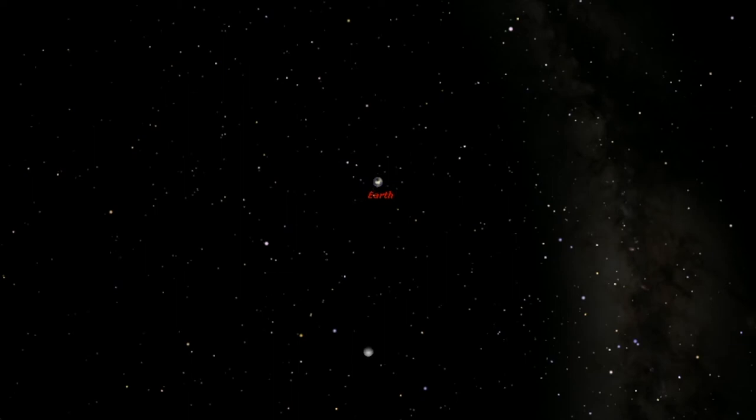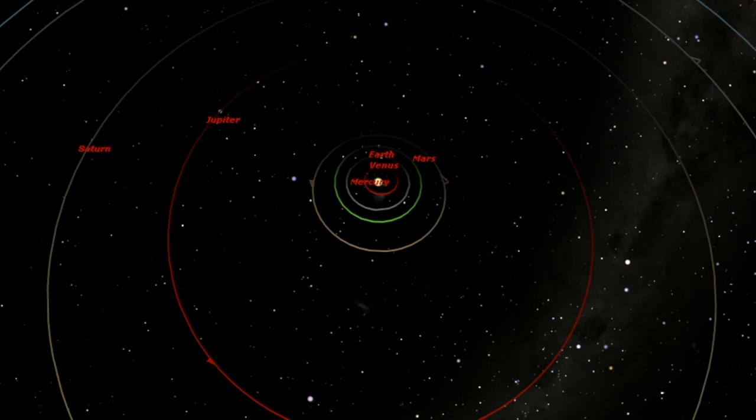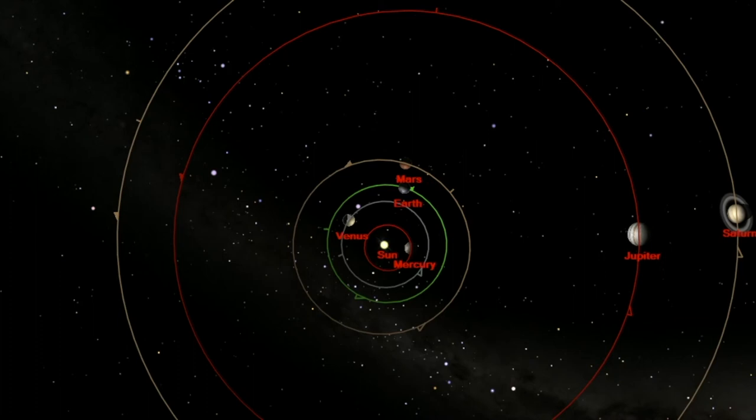One important role the Sun plays in our daily lives is being the center of our solar system. Since the Sun is so much larger compared to the planets, its gravity pulls on them causing them to orbit around the Sun, where one complete orbit around the Sun is called a year. This gravity keeps the planets local to our part of the Milky Way galaxy instead of going off into space.